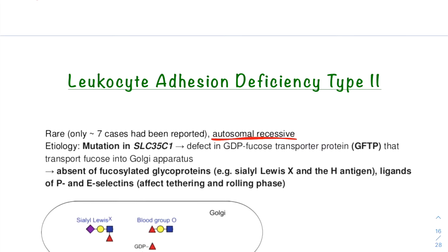LAD2 patients exhibit a deficiency in the expression of cell surface fucosylated glycoproteins. The fucosylated glycoproteins include the H antigen on the RBCs and the Sialyl-Lewis-X molecule. These epitopes are fucosylated glycan structures and these are deficient in LAD2.